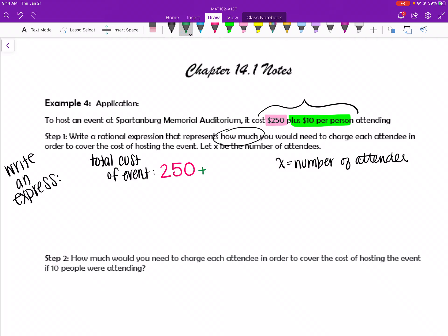I have to pay $250 just to get the space. And then in addition to that $250, I have to pay $10 per, which means times, each person attending. So the total cost of the event is going to be $250 plus 10x. That's going to be my out-of-pocket cost if I'm the one hosting the event.